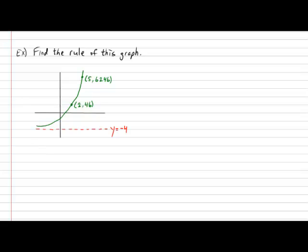Using the higher point, that gives us the partial rule: 6,246 equals a times c to the 5, plus k which is negative 4. For the second rule, we have: 46 equals a times c to the 2, minus 4. To indicate that we will be solving a system, put braces on the left side. Now, the presence of k causes a slight complication. According to the laws of exponents, we cannot do c to the 5 divided by c to the 2 as long as there's a subtract 4 hanging around.